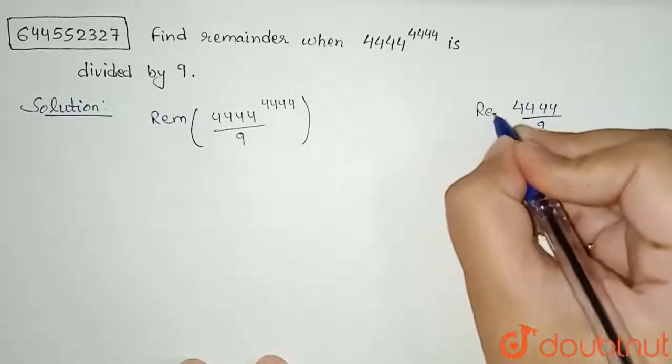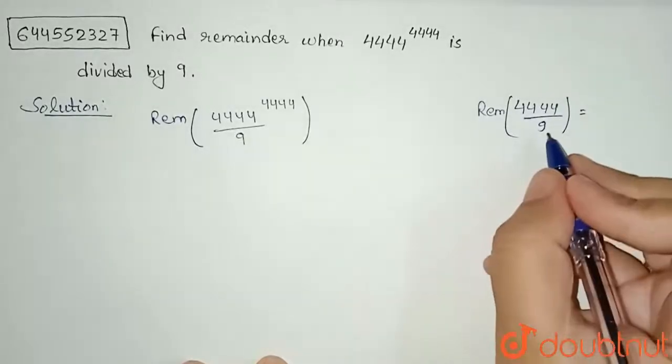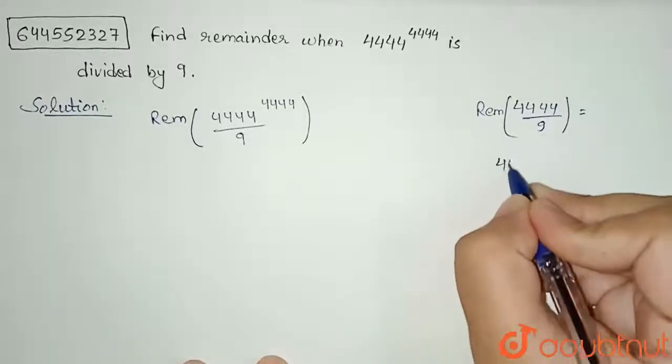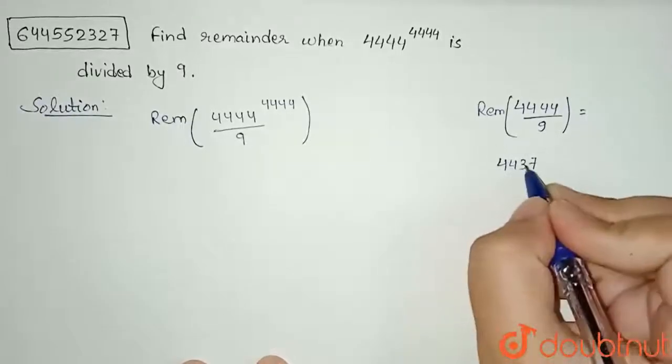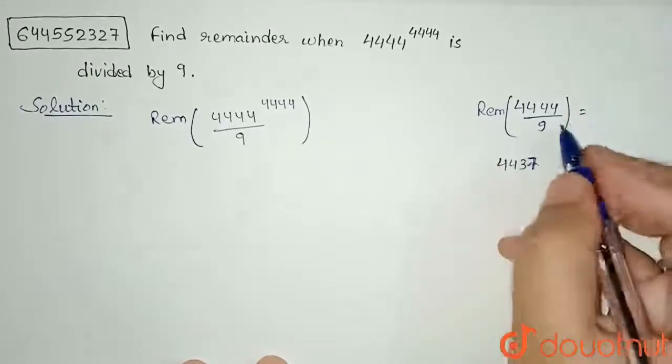divided by 9? The remainder will come out to be how much? See, 9 will perfectly divide 4437, so this is the maximum for which remainder will be 0. So if I subtract this, the remainder will be 7.